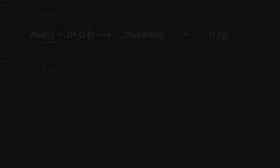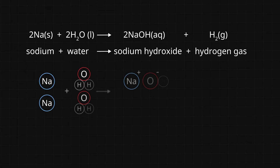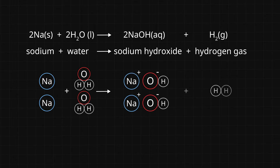For example, when sodium metal, Na, reacts with water, H₂O, the intramolecular forces within the water molecules — O–H bonds — and the sodium atoms — metallic bonds — are broken. New substances are formed: sodium ions, Na⁺; hydroxide ions, OH⁻; and hydrogen gas, H₂. But what happens when we consider phase changes? That's where intermolecular forces come into play.